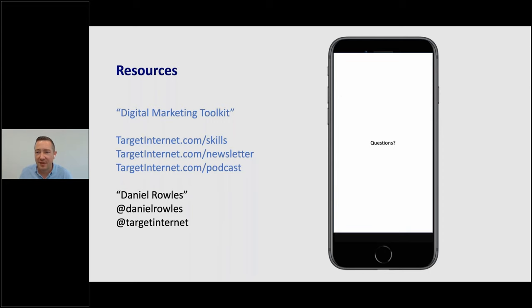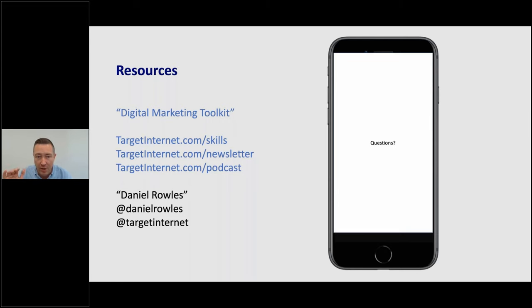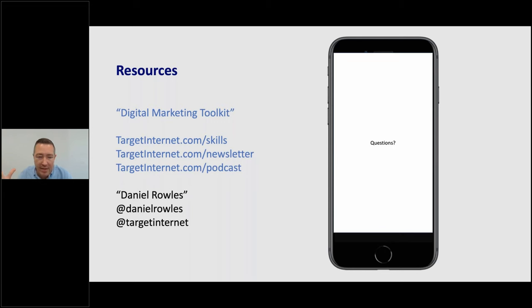Just a few resources before we move into Q&A: Google 'Digital Marketing Toolkit' — it'll be number one in Google and you can download all the websites I've mentioned plus some free trials. To benchmark yourself or your team, go to targetinternet.com/skills. For the newsletter I mentioned, it's targetinternet.com/newsletter. For the podcast it's targetinternet.com/podcast. If you'd like to connect with me in the future, on LinkedIn I'm just Daniel Rowles, on Twitter it's @DanielRowles, and on Instagram it's @targetinternet. We're going to move on to questions now.